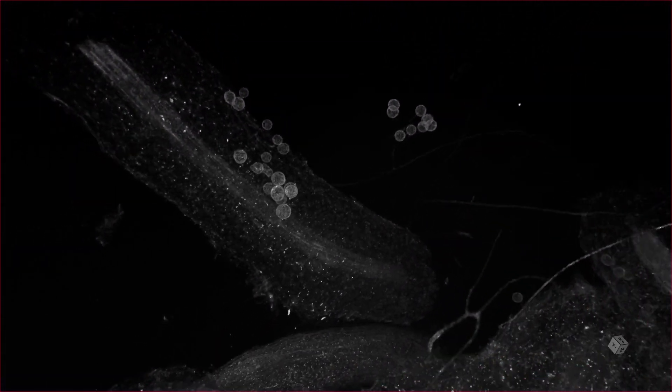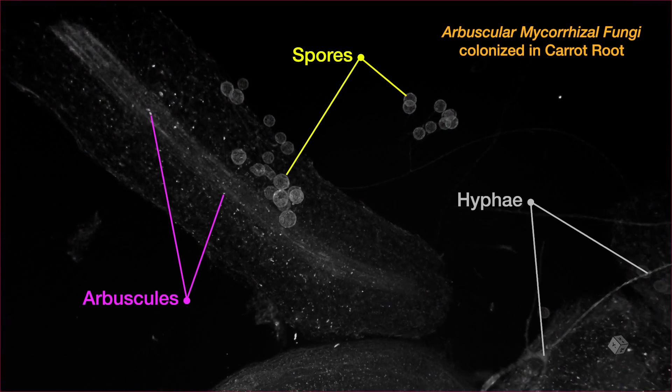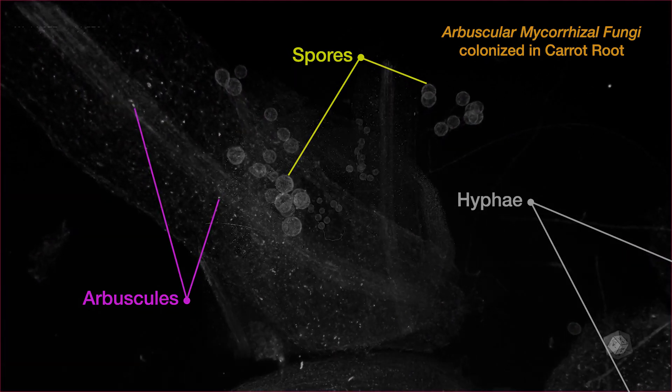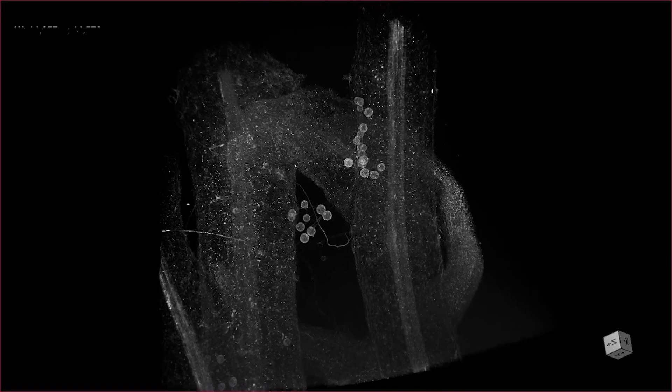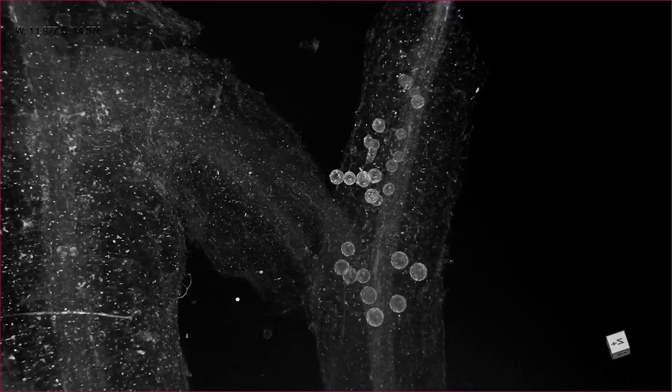These fungi can be seen in the scans as bright white structures growing around and inside the plant root. This imaging technique demonstrates how extensively the beneficial fungus colonizes the inside of the carrot roots, providing many benefits to the plant.